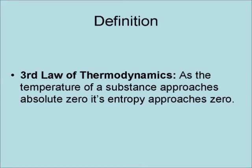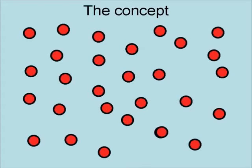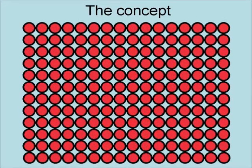The third law of thermodynamics states that as the temperature of a substance approaches absolute zero, its entropy approaches zero. The concept is that because heat is a result of the motion of the molecules in an object, and that this motion causes the molecules to move around and spread out, this causes a condition of high entropy.